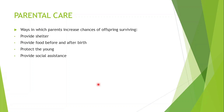Then our last topic: parental care. This is defined as the ways in which parents increase the chances of offspring surviving. They do this by providing shelter, providing food before and after birth, protecting their young, and providing social assistance.